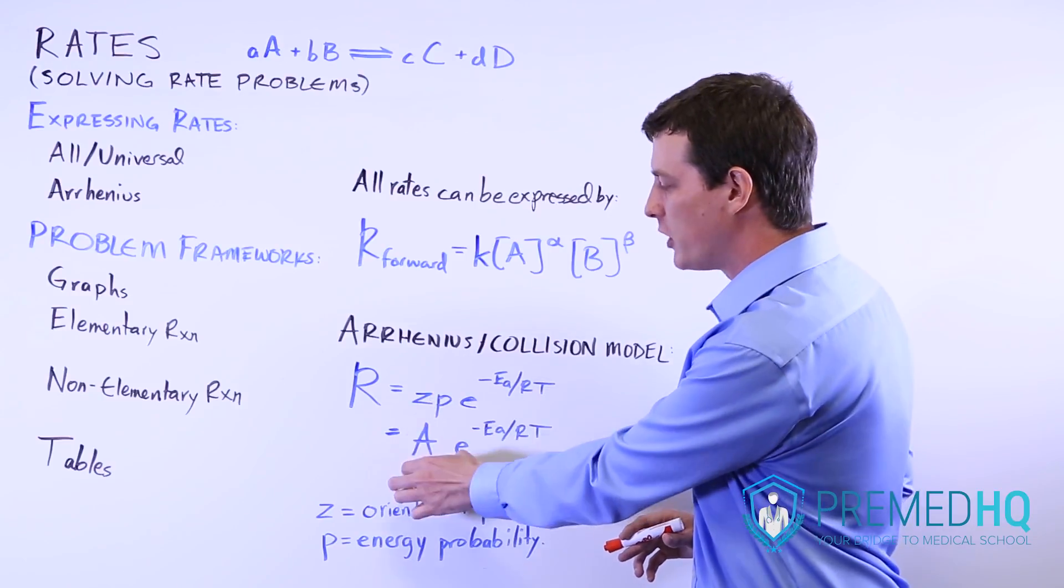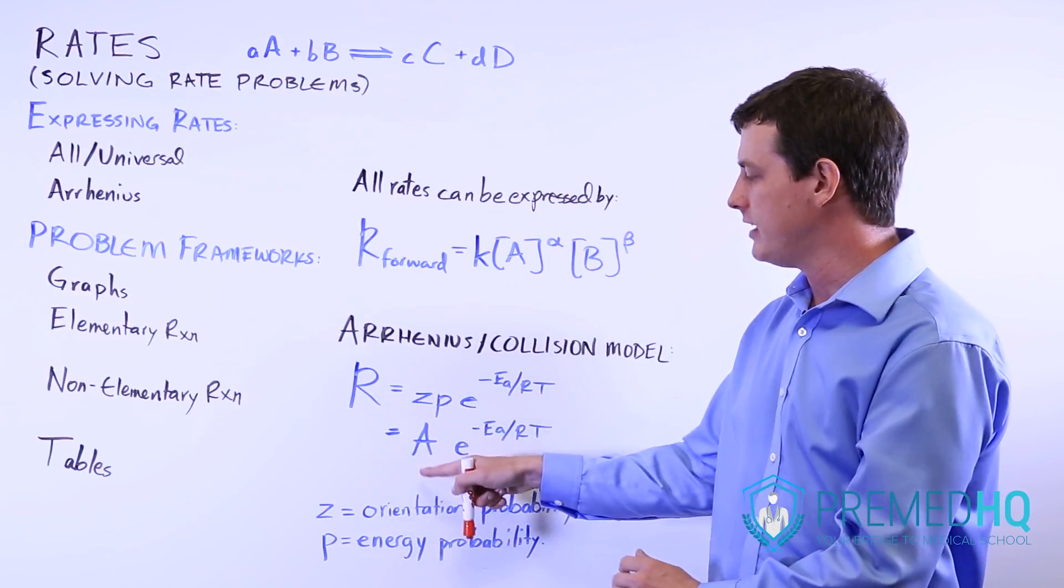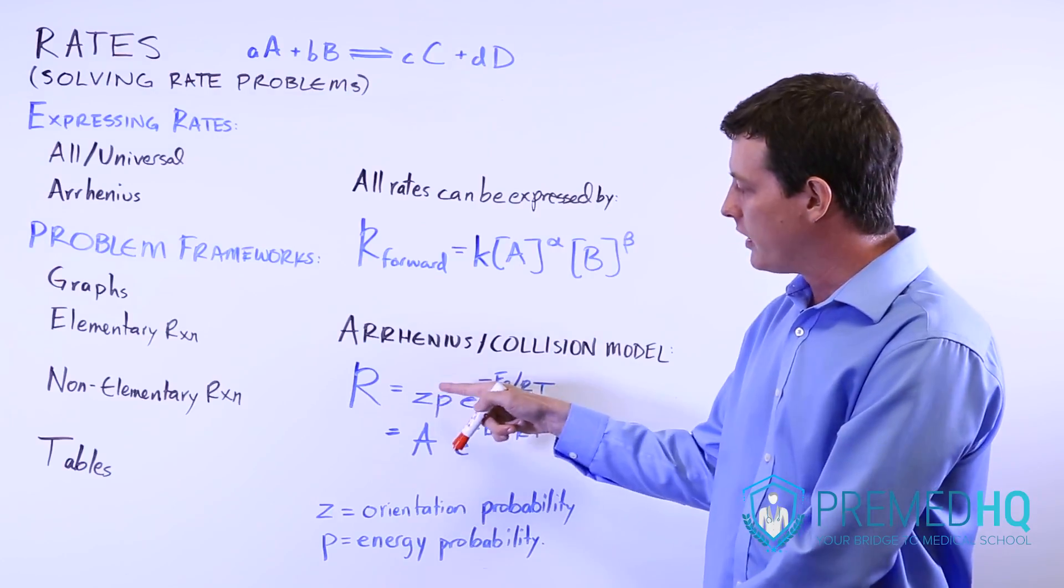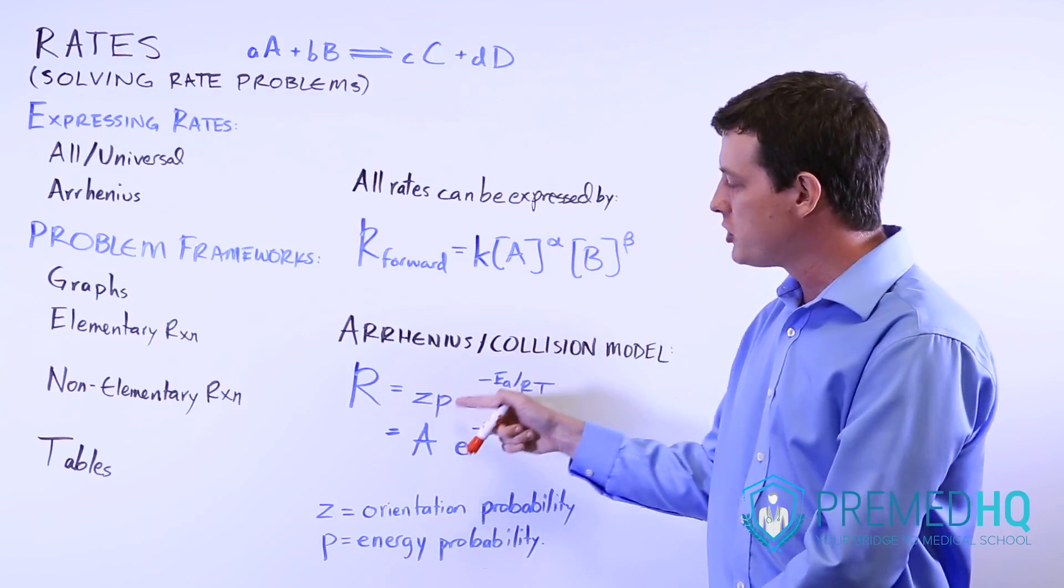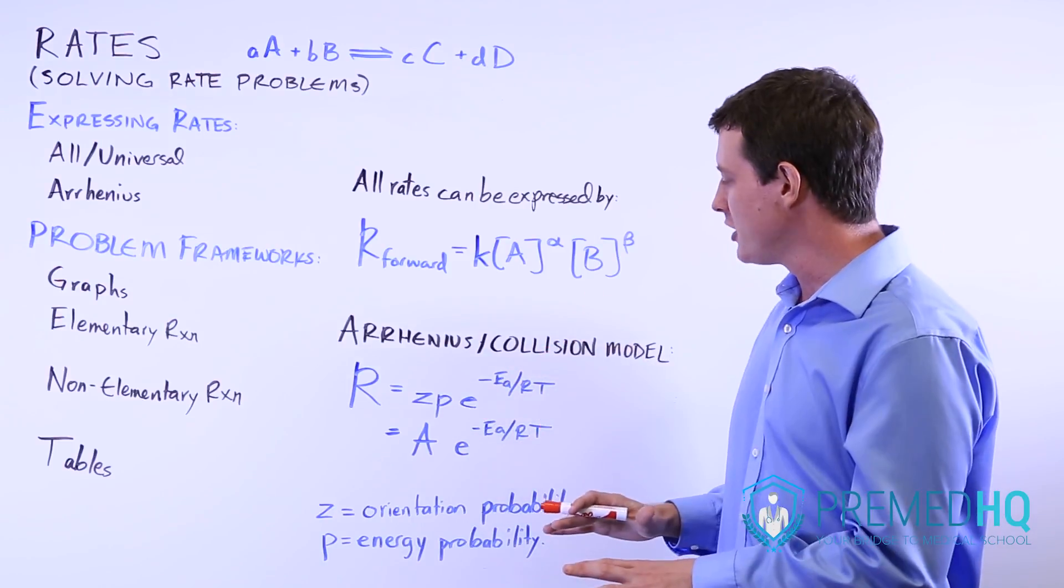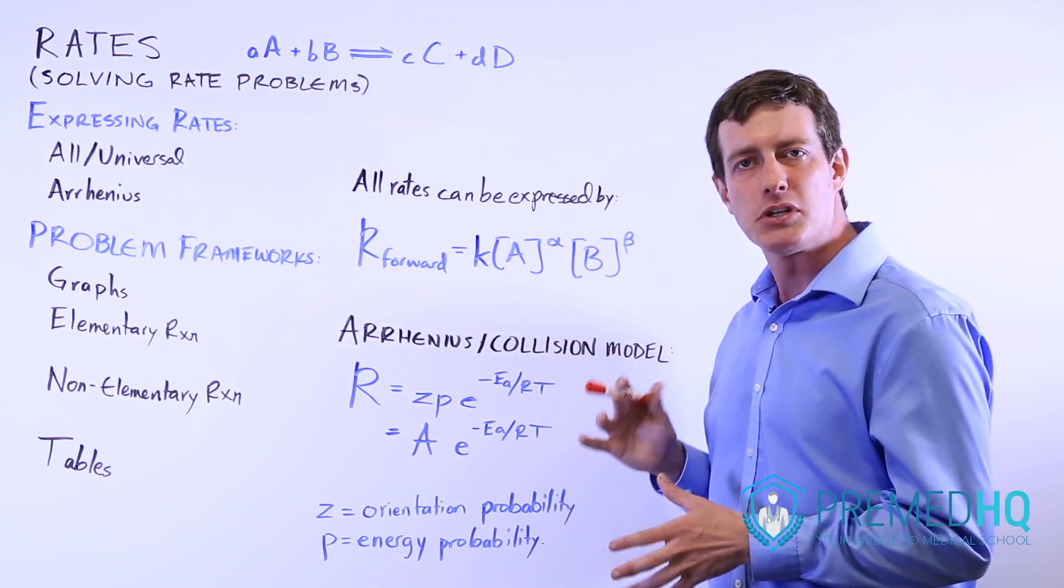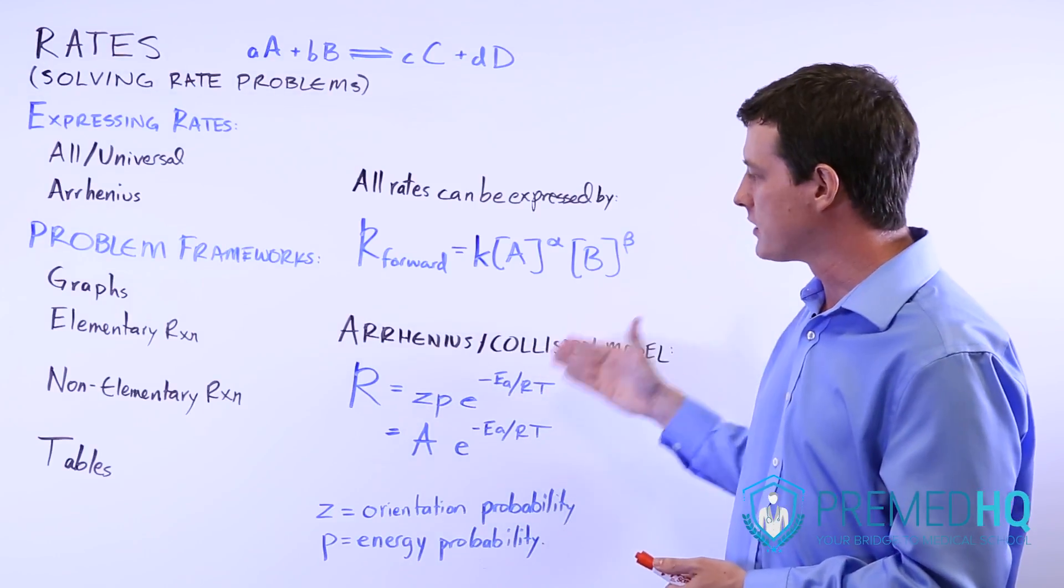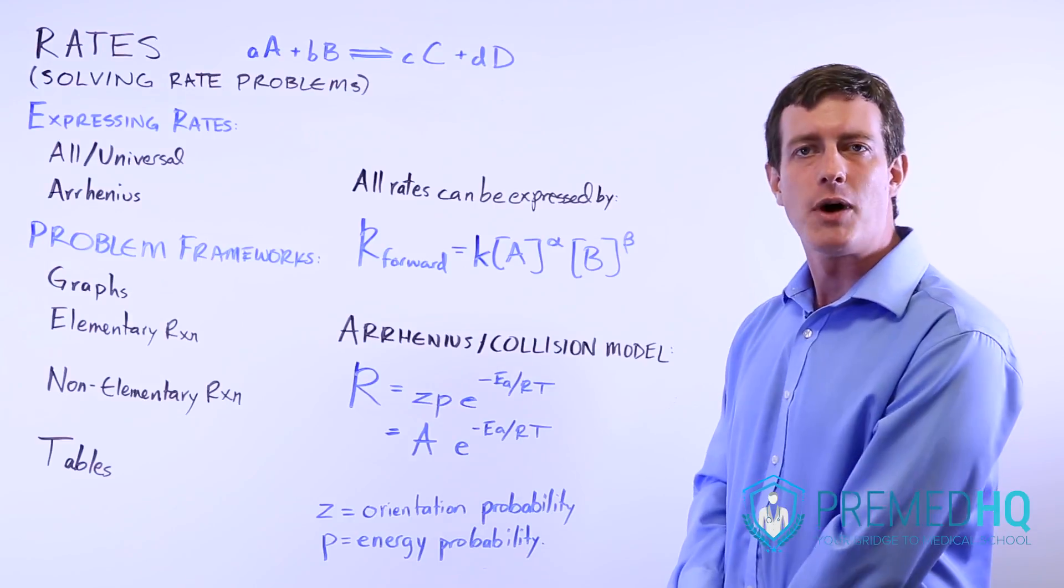Z and P, both of which can be combined into the Arrhenius factor, capital A. But notice that orientation and energy are both factors, as are having a low energy of activation and a high temperature. Those are all factors that increase the rate of a reaction, and this is all expressed by Arrhenius's collision model.